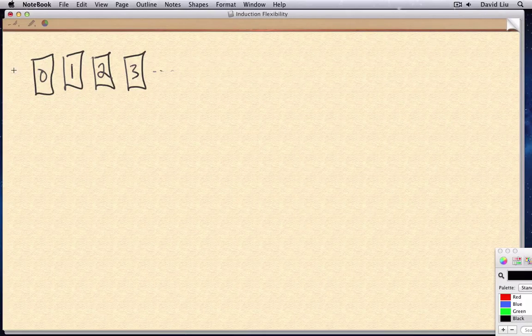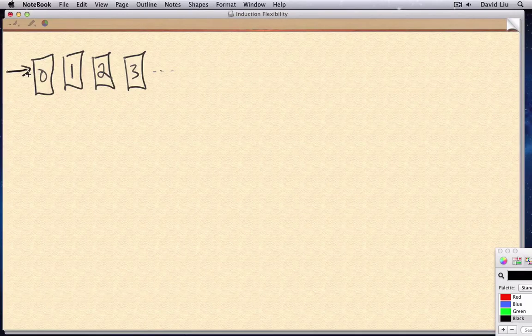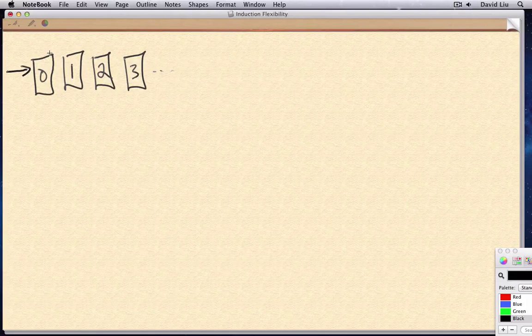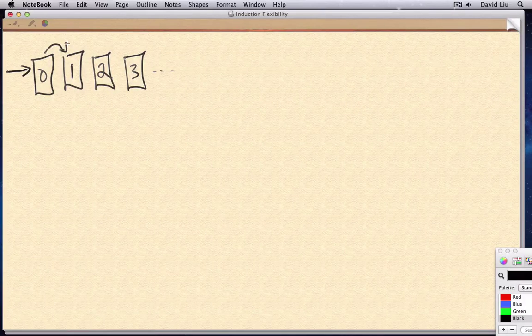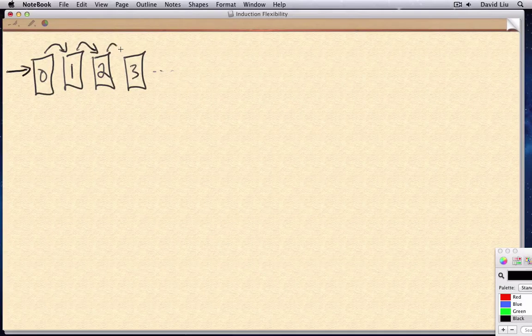First, we needed to ensure that we would tip over the first domino, that somehow we were going to push domino zero over. And then we had to prove these links between the dominoes. That is, when domino zero falls, so does domino one. Then when domino one falls, so does domino two, etc.